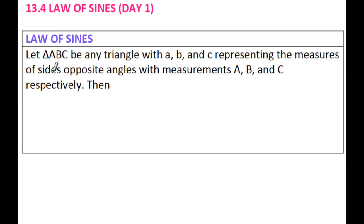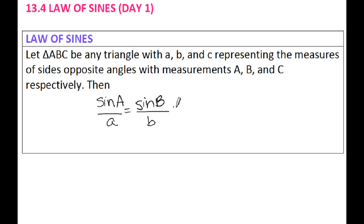The formula for Law of Sines is: sine A over A equals sine B over B equals sine C over C. It's just the ratios of the sine of the angles with their corresponding sides. You're not going to use all three ratios at once — you're mostly going to use just two at a time: sine A over A, sine B over B, and sine C over C.